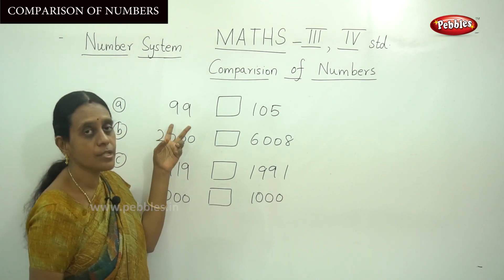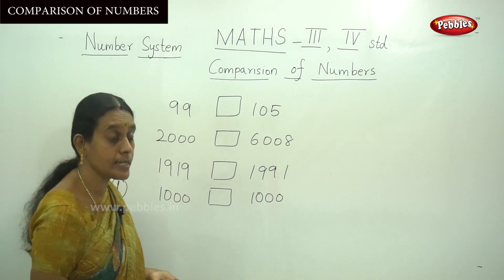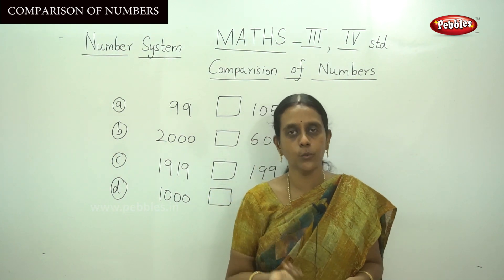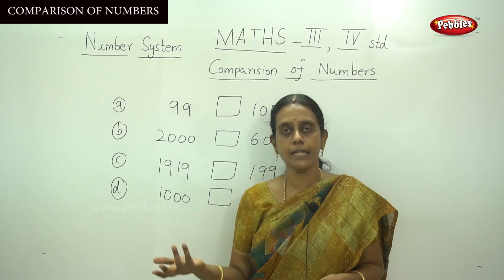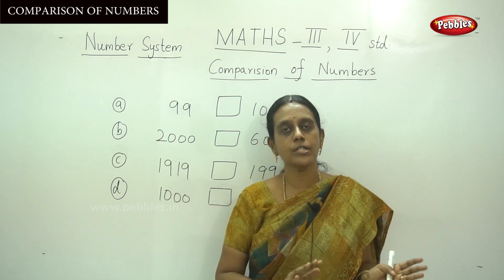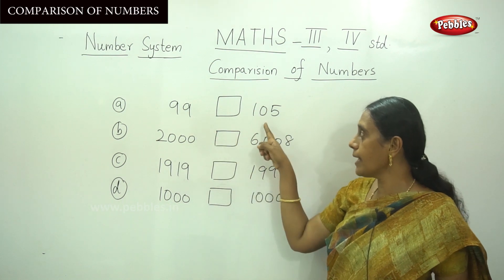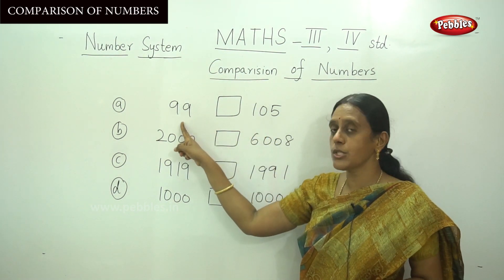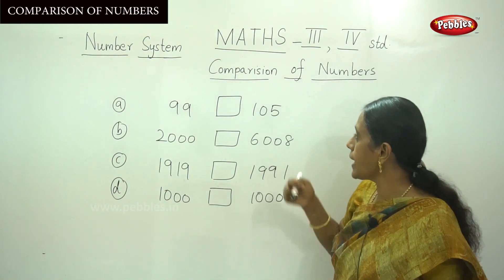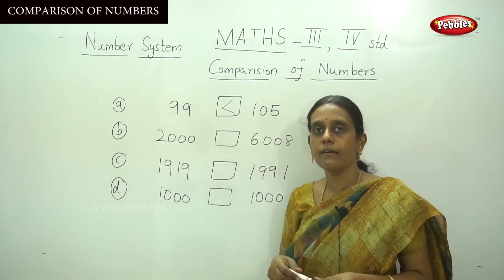Basically, a two-digit number is always lesser than a three-digit number. For example, 99 is lesser than 100 because 99 has only two digits but 100 has three digits. So 99 is lesser than 105 — put the lesser than sign.